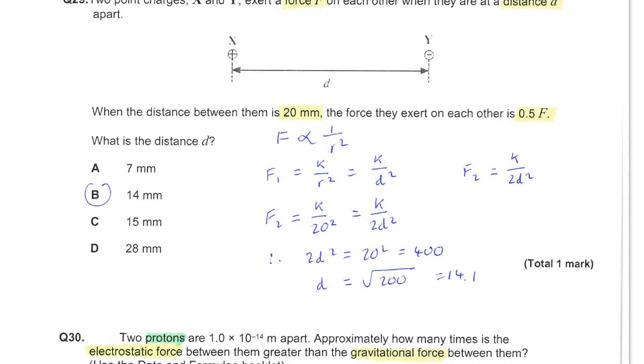Next, another question in a similar context. You have two point charges X and Y and they exert a force F on each other when they are a distance D apart as shown in the diagram. You are told that when the distance between them is 20mm, the force that they exert on each other is half the original value when the separation was D. You need to use this information to find the value of the separation D.